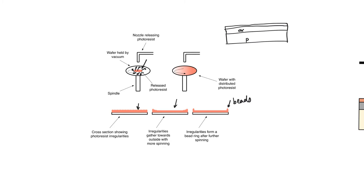The first step is the soft bake, done at a relatively low temperature for a short time. This soft bake drives away most of the moisture in the photoresist. The main aim is to solidify the photoresist just enough so that it does not spill from the wafer as we handle it. This is done before exposure.